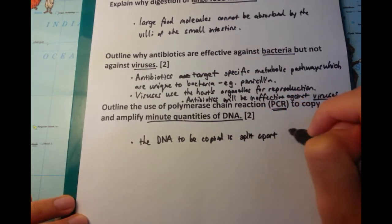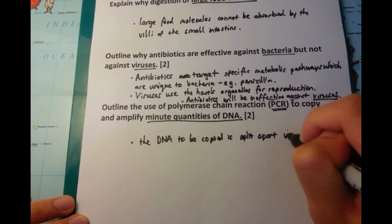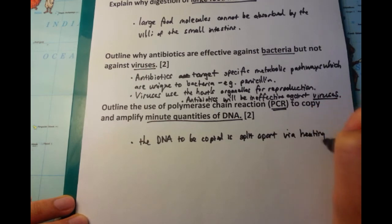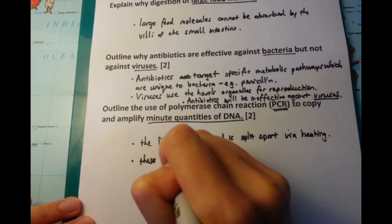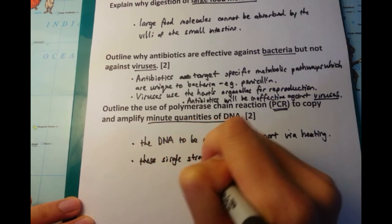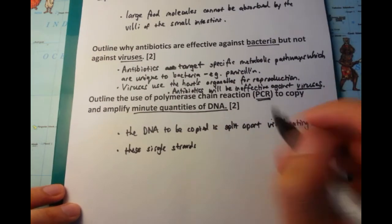So the DNA to be copied is split apart via heating. So you kind of cook it and then those hydrogen bonds in between the double helix strands, they melt apart and you get two single strands. Now these single strands afterwards, they undergo complementary base pairing.